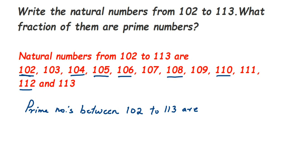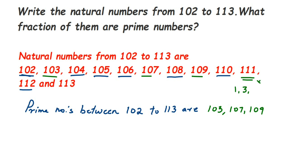Starting with 103 — it is a prime number because it doesn't go in any table except 1 and 103. Similarly, 107 and 109 are also prime numbers. Now 111 — this one you have to remember. It goes in the 1 table, the 3 table, and the 37 table, so it has more than two factors. Therefore, 111 is not a prime number.